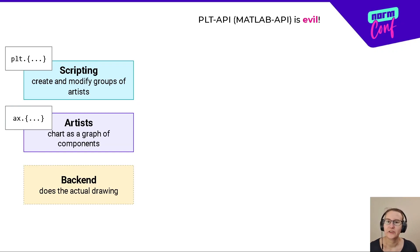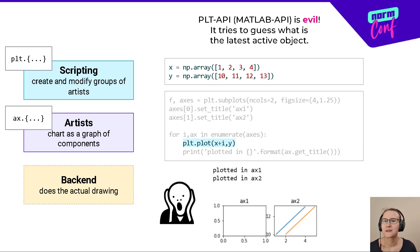Now, the problem is that, for historical reasons, the PLT API is kind of evil. Matplotlib originally tried to compete with Matlab, and it is the Matlab approach that was kind of bad. It doesn't do things directly. Instead, it tries to guess what is the latest active object and modify it. So we can only have an indirect control by creating the objects in the right sequence, so it doesn't always work as expected.